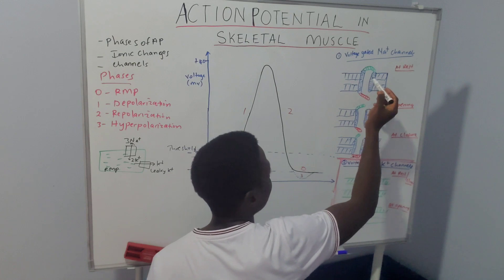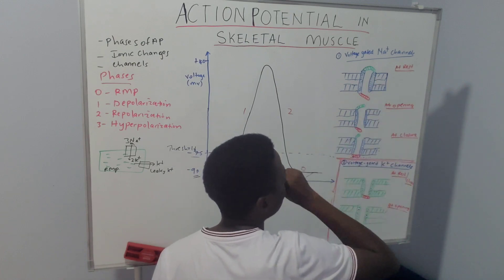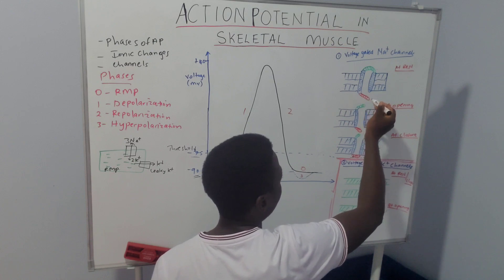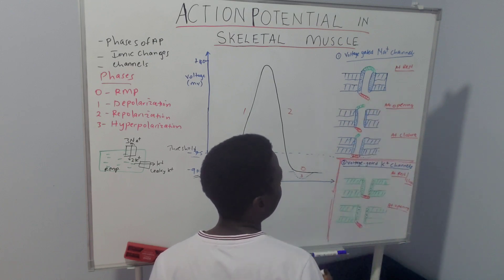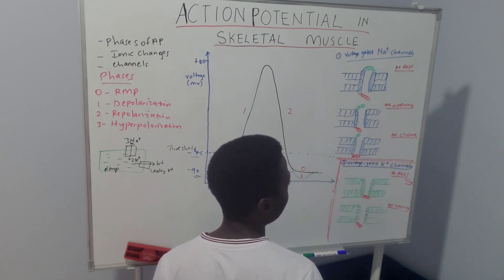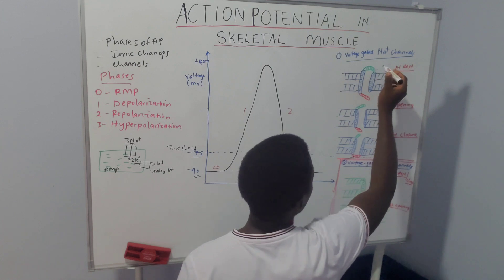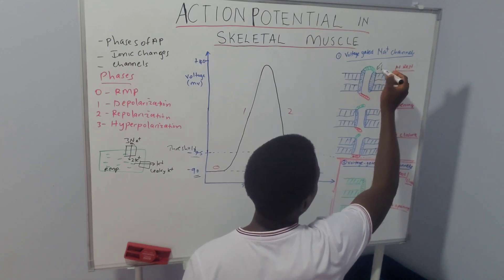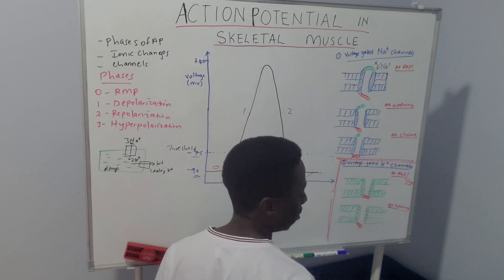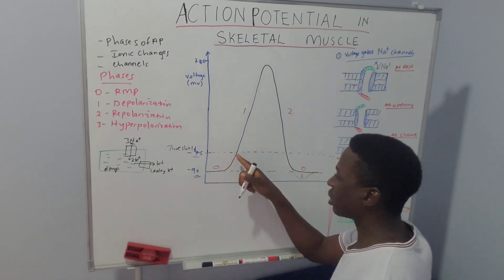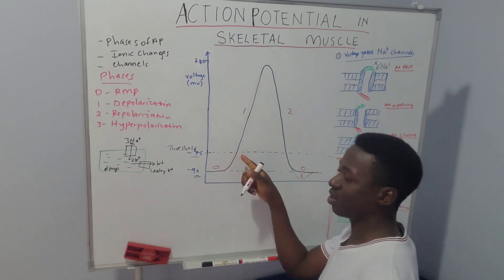On these channels at rest: the voltage-gated sodium channels have an activation gate on the outside and an inactivation gate on the inside. At rest, the activation gate is closed, so we don't have any influx of sodium — no sodium influx at rest. But as soon as the membrane potential reaches the threshold, it causes opening of the voltage-gated sodium channels.